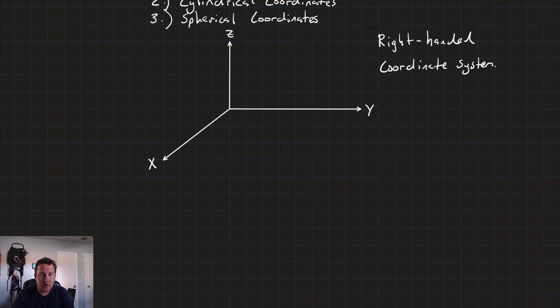Now, the method of drawing our coordinate system with x being the diagonal here, z being vertical, and y being horizontal, is called a right-handed coordinate system.